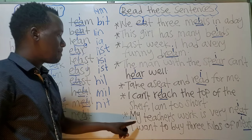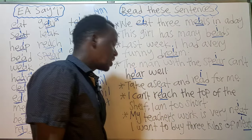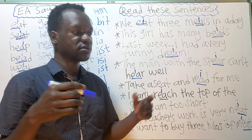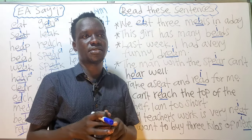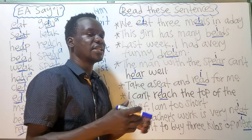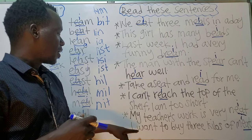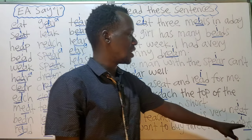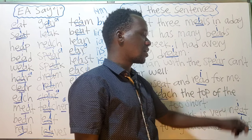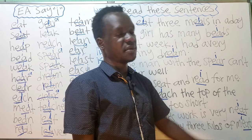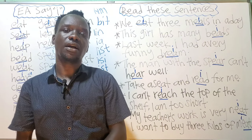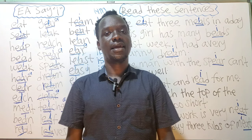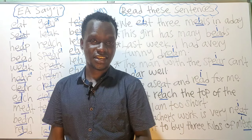That means you are too short and cannot reach up to pick something on top of a shelf. Then: 'My teacher's work is very neat,' meaning the way your teacher writes or the work he has organized is very clean and good. Finally: 'I want to buy three kilos of meat.' Remember EA sounds like E — 'meat.' If you like the content, subscribe, like, and share. I'll see you next class!